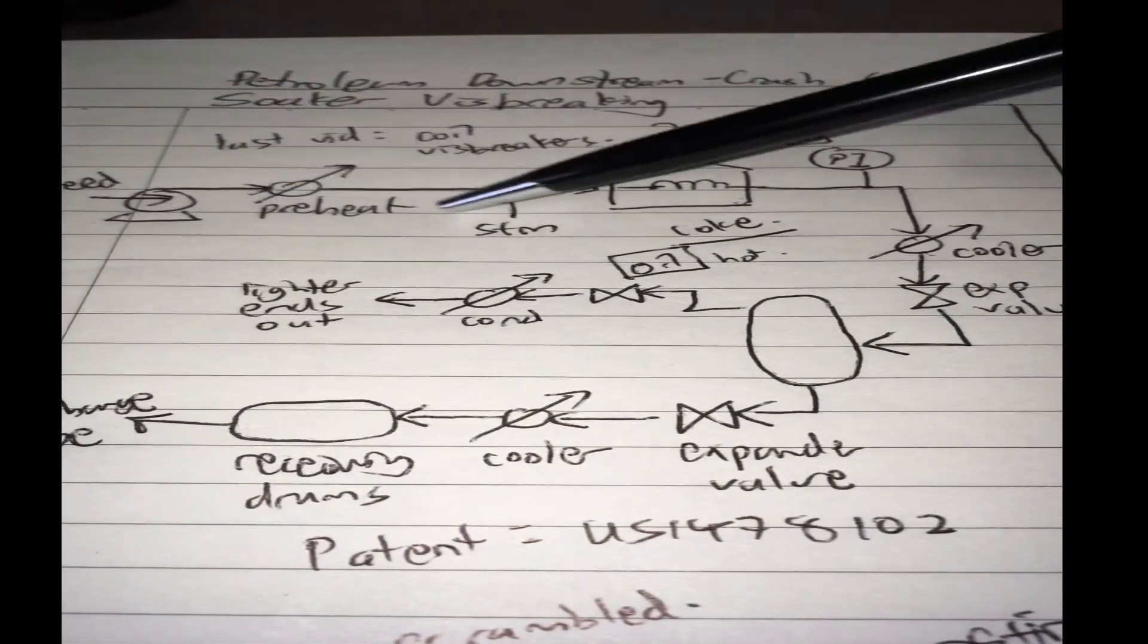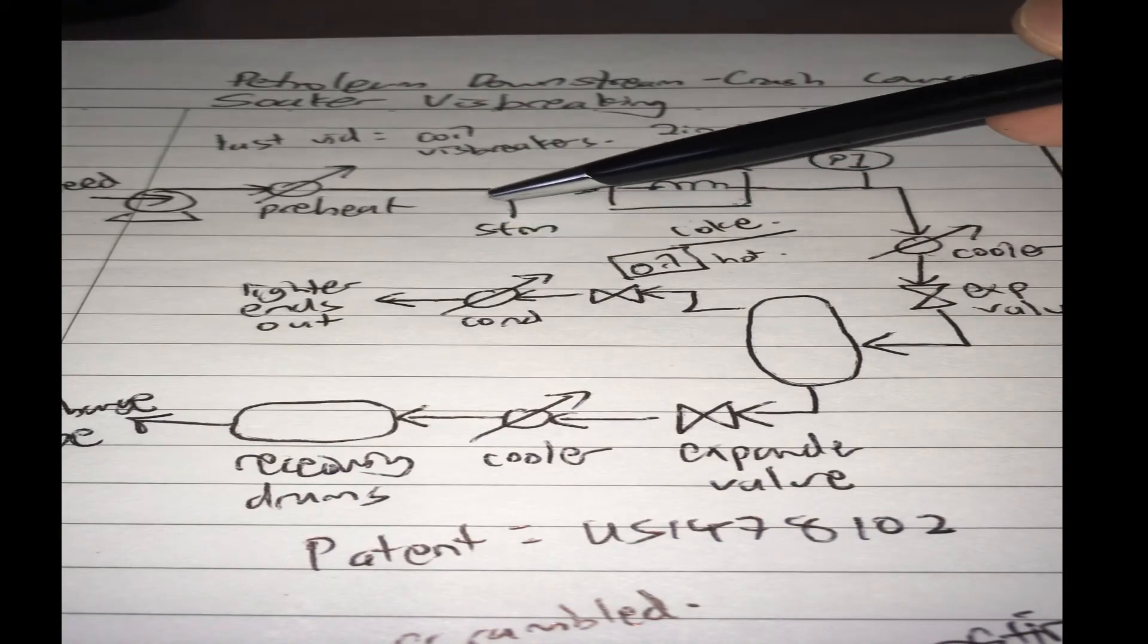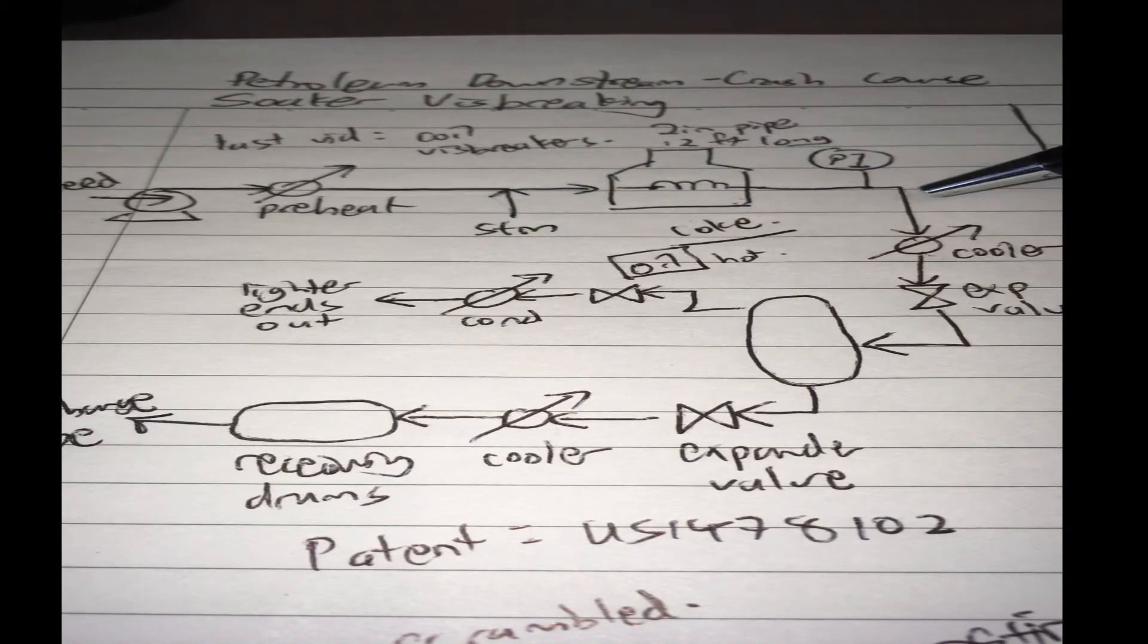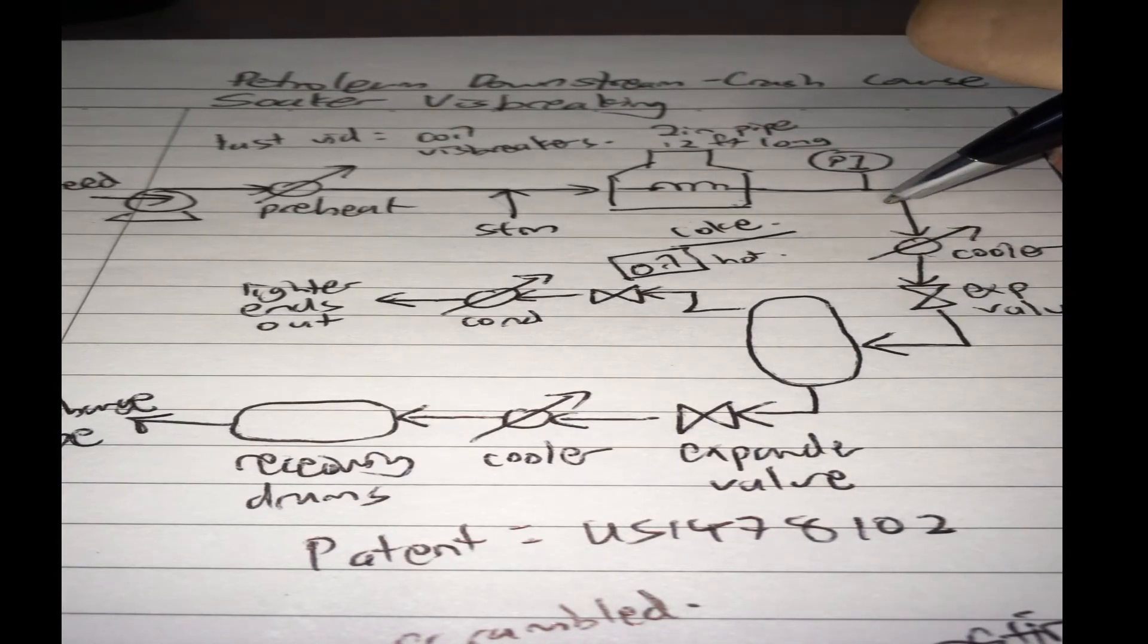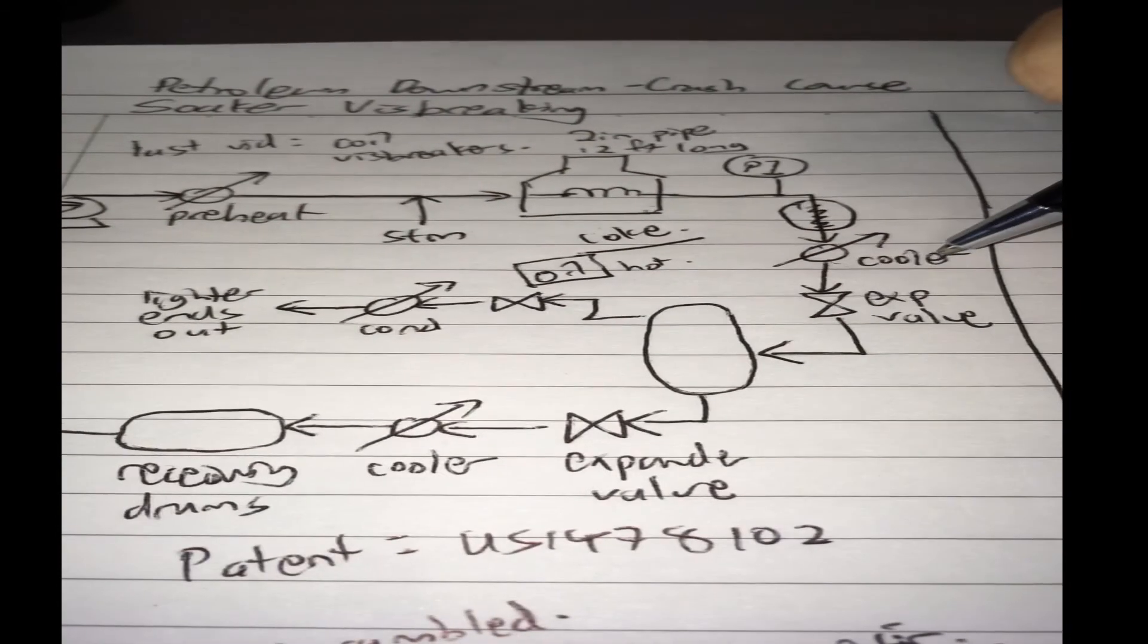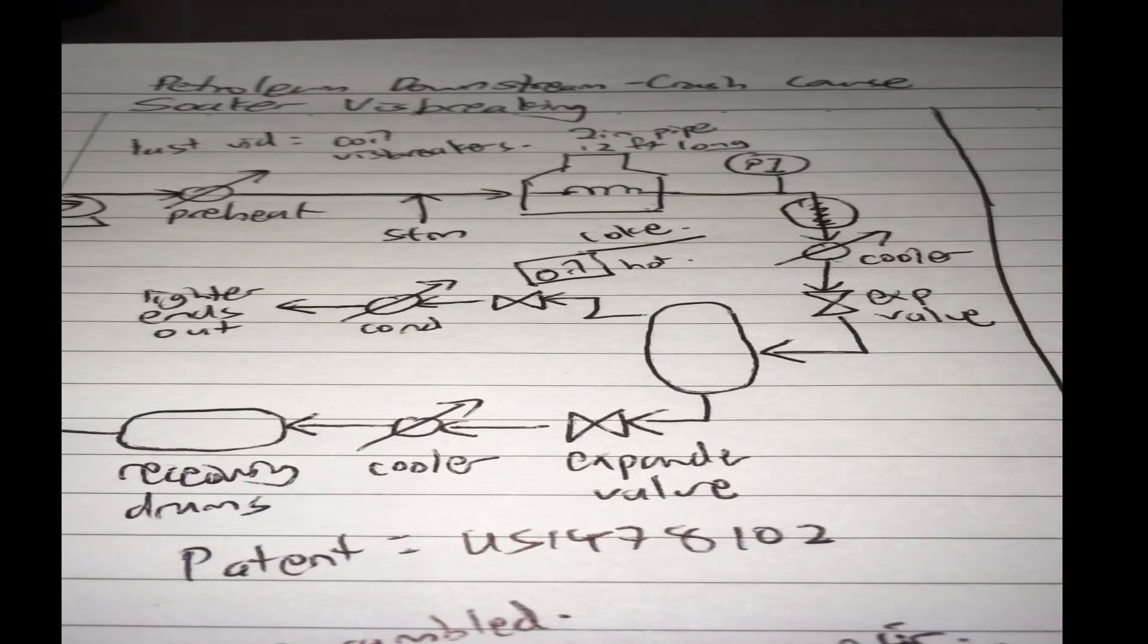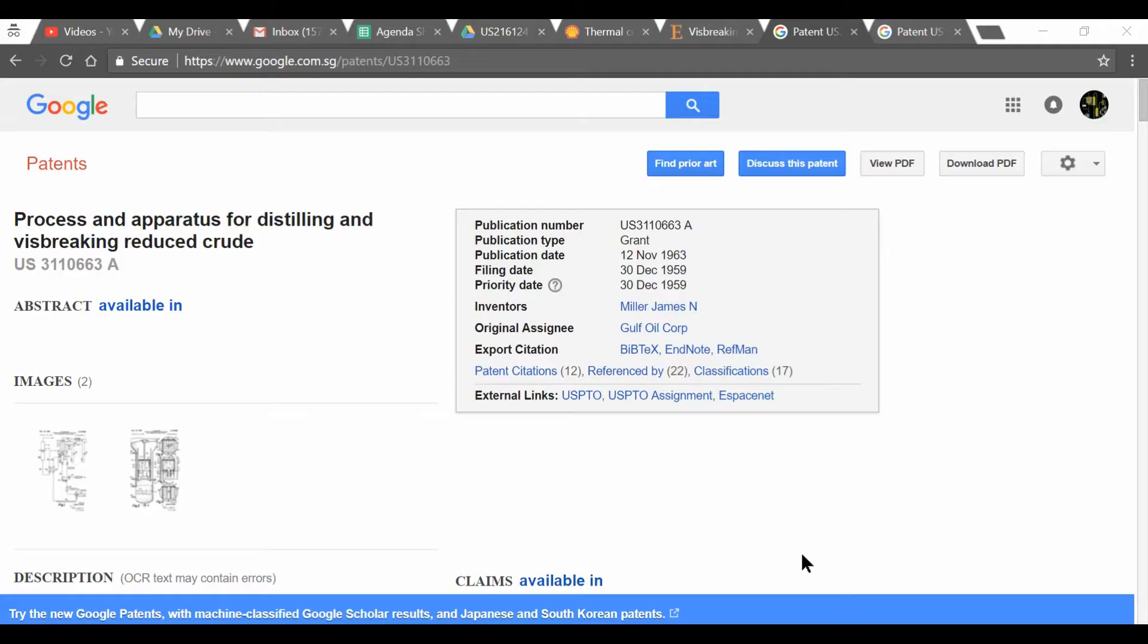In this diagram, what does it mean to be having a soaker? You probably put your soaker at around here, just before the cooler. Because what the cooler does is quench the reaction to stop all the visbreaking that's occurring so as to prevent the overcracking.